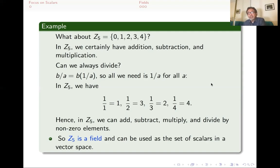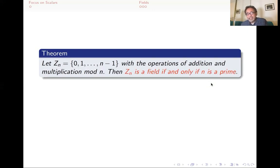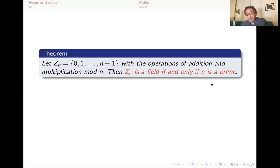So we can have vector spaces where the scalars are Z5. The question is: which of the Zn's can we use? The theorem is that Zn is a field if and only if n is a prime. If n is a prime number — like 5, 7, or 47 — then Z mod n will be a field. But if n is not prime, it will not be. It's not difficult to show that if n is not prime it fails to be a field; it takes a bit more work to show that if it is prime, it will be a field. We need fields to be used as scalars for vector spaces. Now we know that we can use Z mod p as long as p is a prime number.